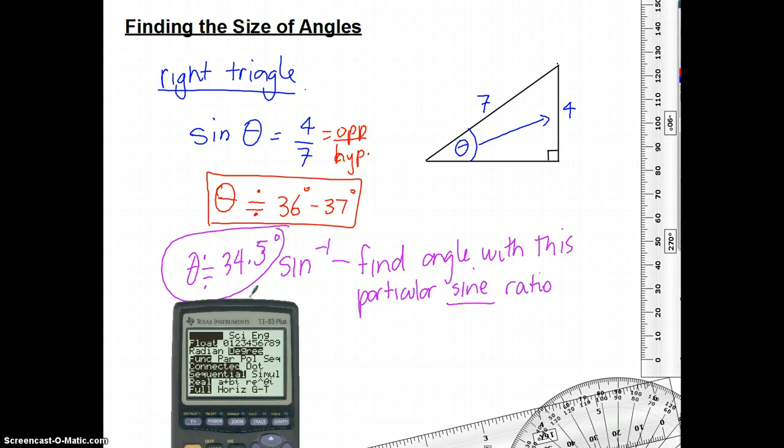And the reason we can do that, and I think this is kind of neat, so this is saying that for an angle of 34.5 degrees about, my ratio is always going to be 4 over 7.